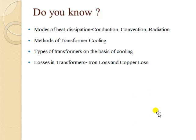Before starting the actual lecture, I would like to request you to understand the prerequisites for this topic. You must be aware of the three basic modes of heat dissipation: conduction, convection, and radiation. You should know the different methods of transformer cooling, types of transformers based on cooling, and the two major losses responsible for heat generation in a transformer — iron loss (core loss) and copper loss in the windings.